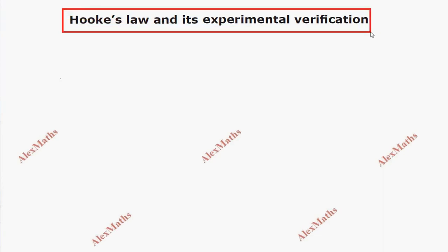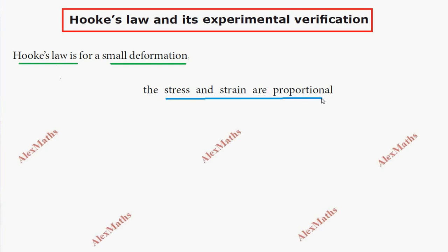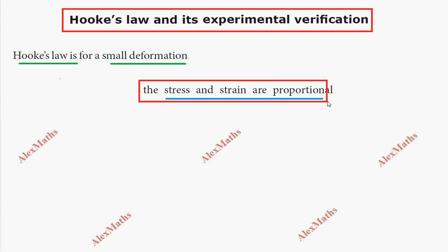Hi students, this is Alex here. In this video, we cover Hooke's Law and its experimental verification for small deformation. Deformation means change in length — when a force is applied, the length changes. For small deformation, Hooke's Law states that stress and strain are proportional to each other. This is Hooke's Law, and we are going to experimentally verify it.